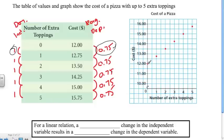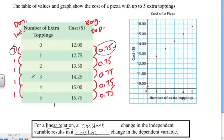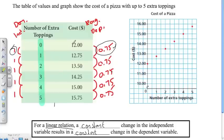In this special case, where both the domain and the range — or the independent and dependent variable — are being increased by constants, this relation will always give you a straight line when you graph it. We have $12 for a pizza with zero toppings, $12.75 for a pizza with one topping, and it continually increases by 75 cents for each extra topping. We call this special scenario a linear relation. For a linear relation, a constant change in the independent variable results in a constant change in the dependent variable. Linear means straight — it represents a straight line when graphed.